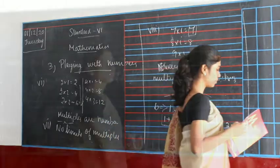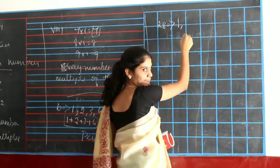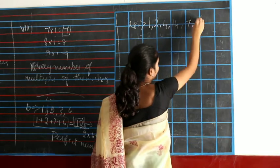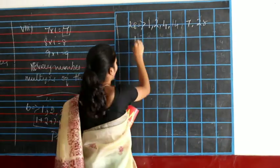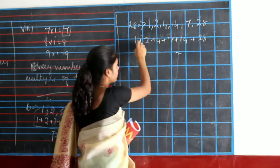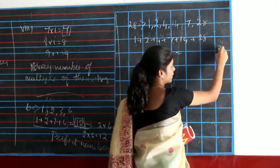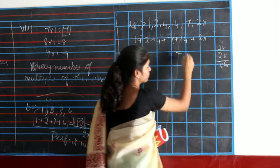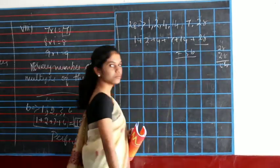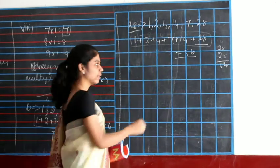Another example of a perfect number is 28. The factors of 28 are 1, 2, 4, 7, 14, and 28. So 1 plus 2 plus 4 plus 7 plus 14 plus 28: 1 plus 2 is 3, 3 plus 4 is 7, 7 plus 7 is 14, 14 plus 14 is 28, 28 plus 28 is 56. You can see 56 is double 28. So if you add all the factors and get double the number, it is called a perfect number.